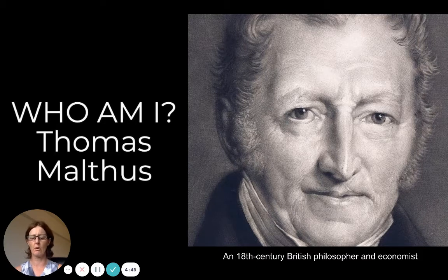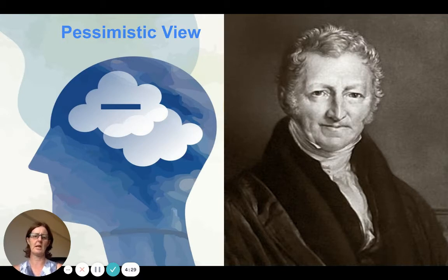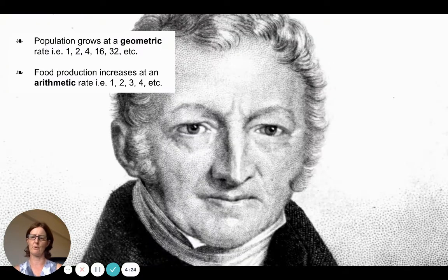Esther Boserup is an optimistic person and has a different view. Going back to who Malthus is — he was an 18th century British philosopher and economist. The period of time in which he lived really influenced his view. He didn't have access to the technology we do today, which is why he had a pessimistic or negative view.